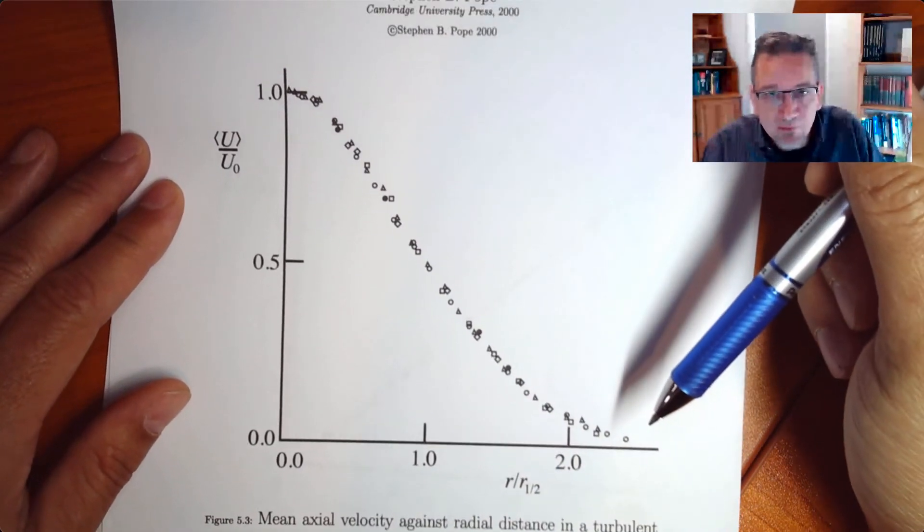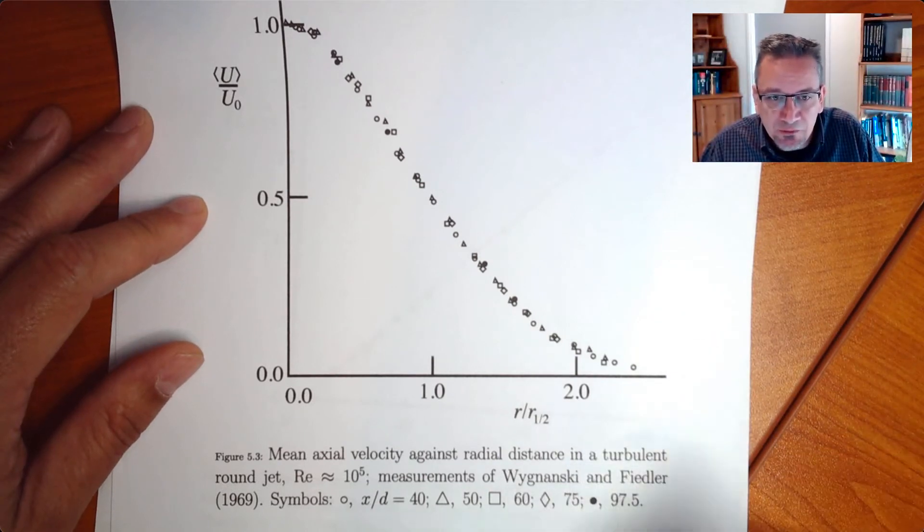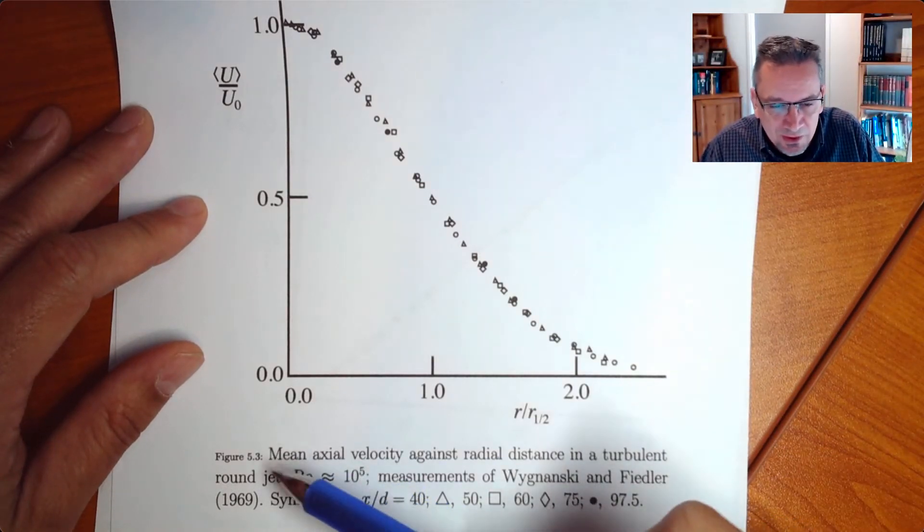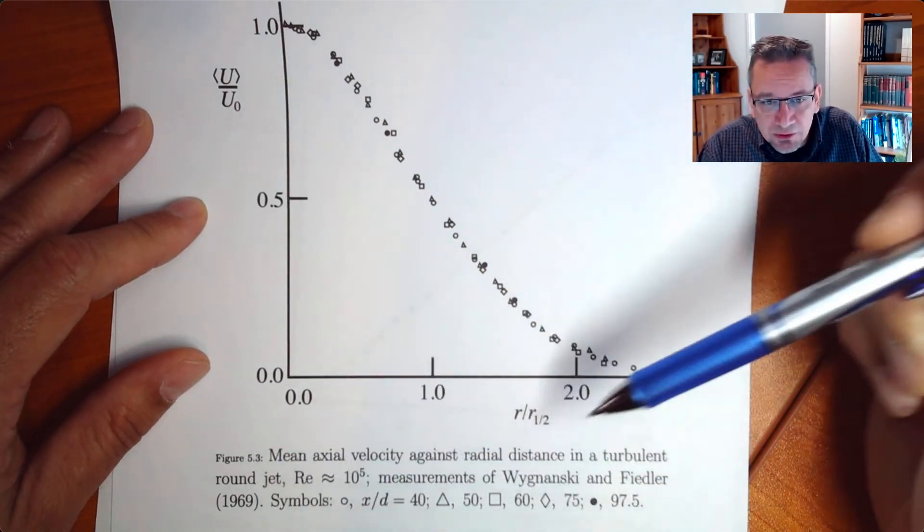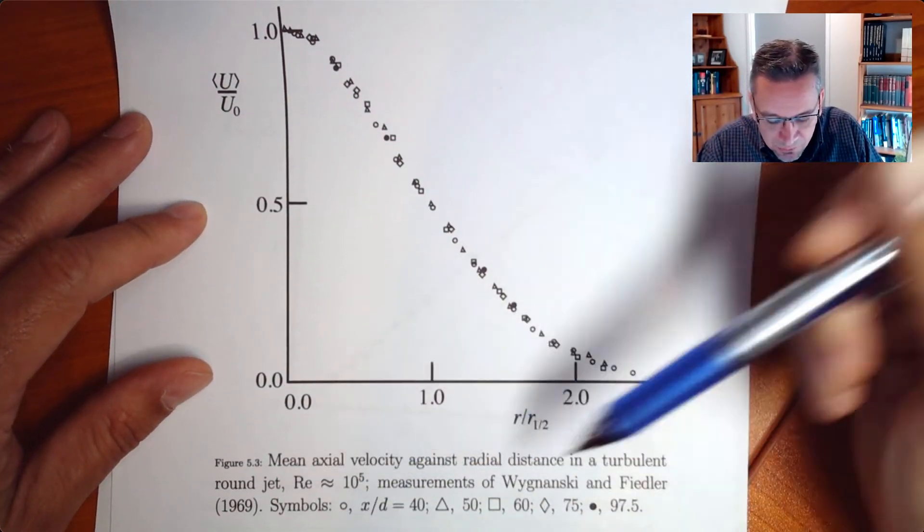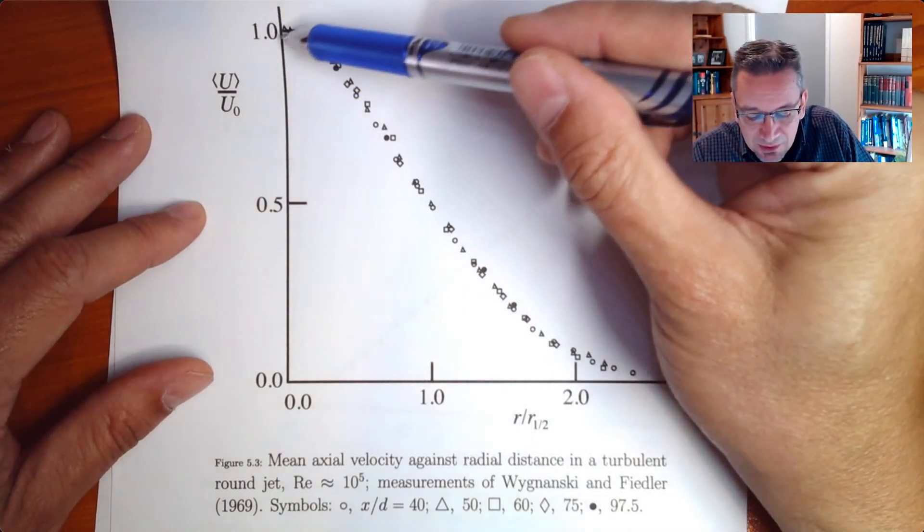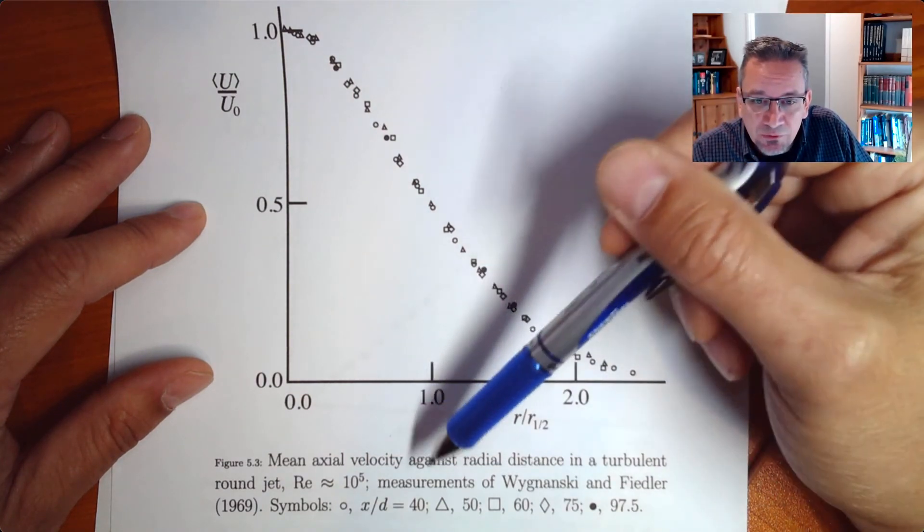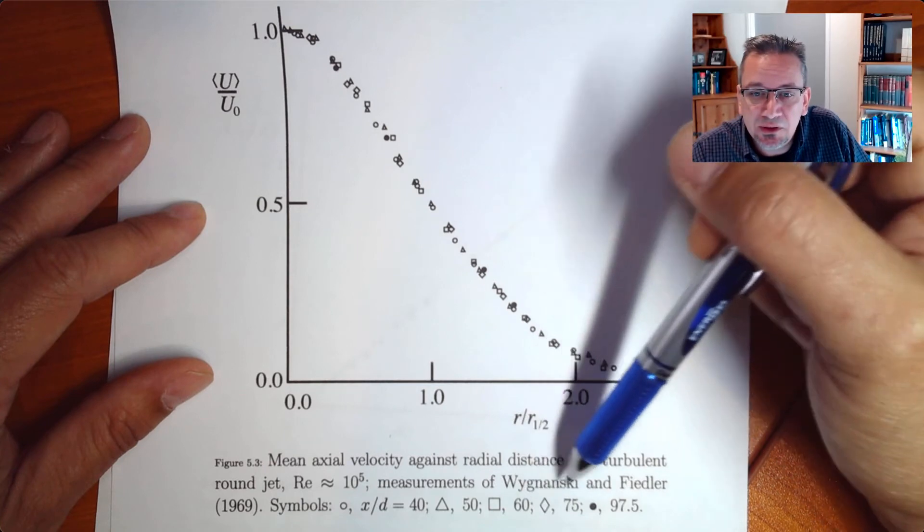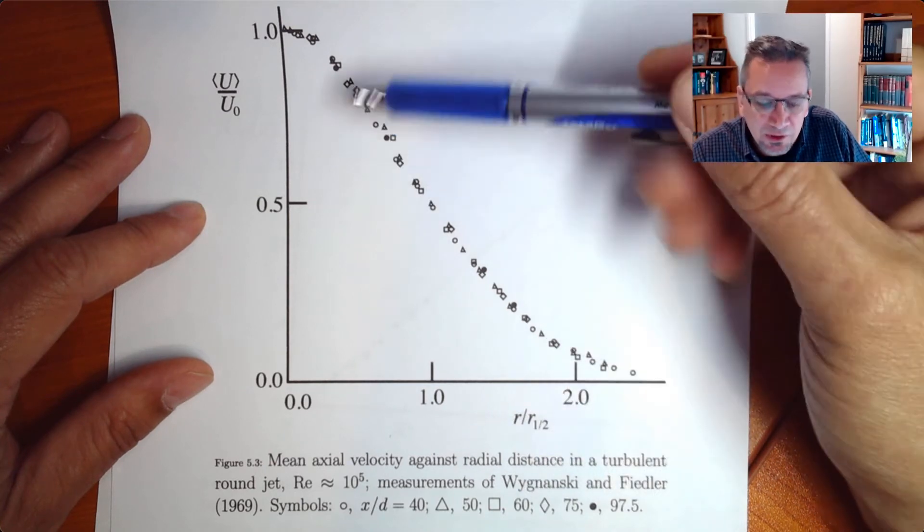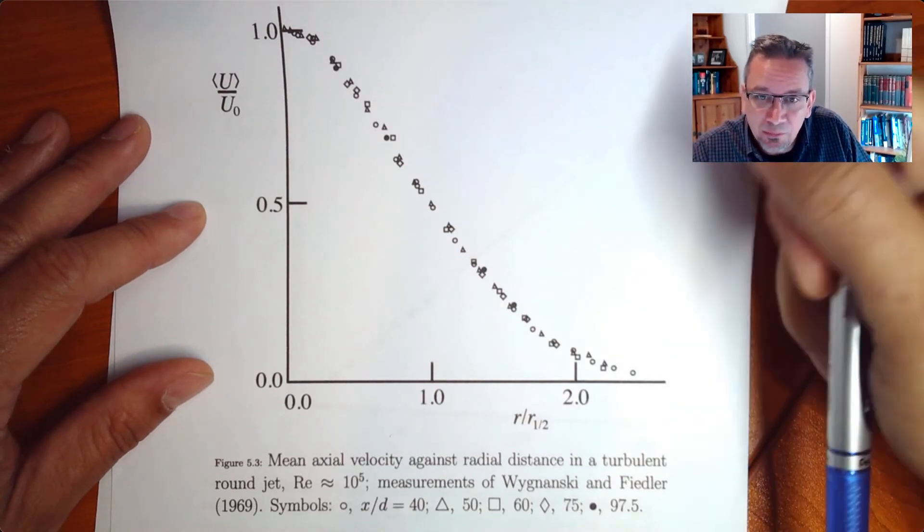So these are actual measurements from Wygnanski and Fiedler from 1969. And so they are quite old already, but still one of the most cited papers in terms of jets. So you see that all of these measurements for different distances here, x over d equal 40, 50, 60, 75, and almost 100, they're all suddenly falling onto one profile.